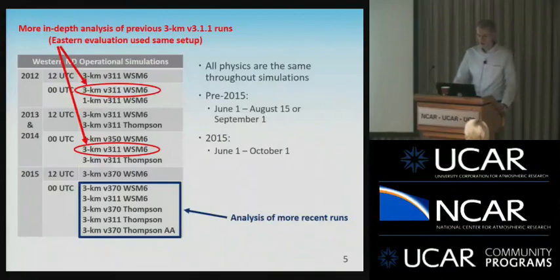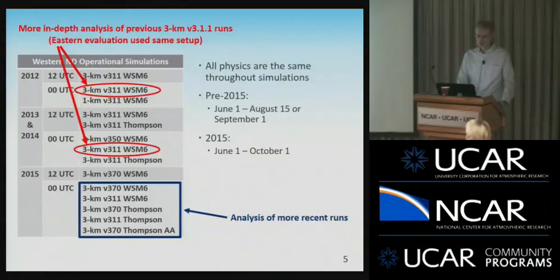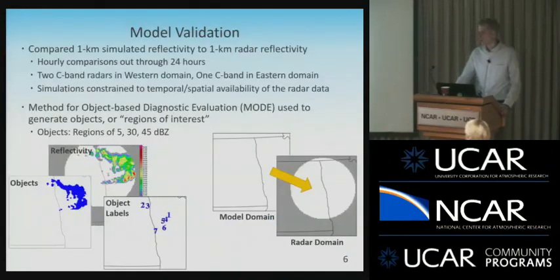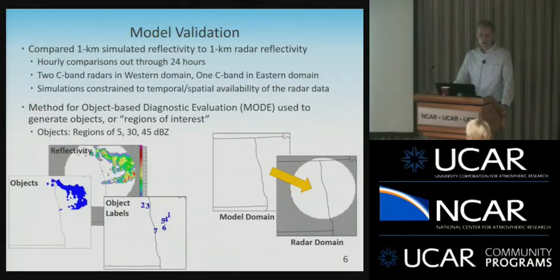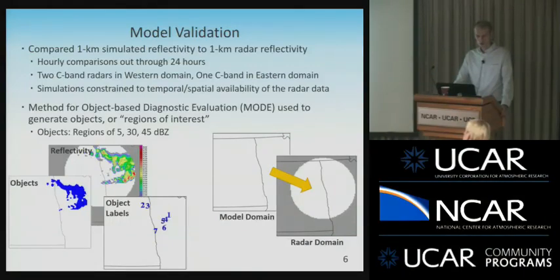I'll do a couple slides about the previous work, which is a more in-depth analysis of the 3.1.1 runs, and I'll also show eastern simulations to see if there's a difference between regions. For the actual model validation, I'm comparing one-kilometer simulated reflectivity to one-kilometer AGL radar reflectivity, doing hourly comparisons from the 6th valid forecast time up to 24 hours. We verified across two C-band radars in the western part of the state and one C-band — the UND research radar — in the eastern domain.